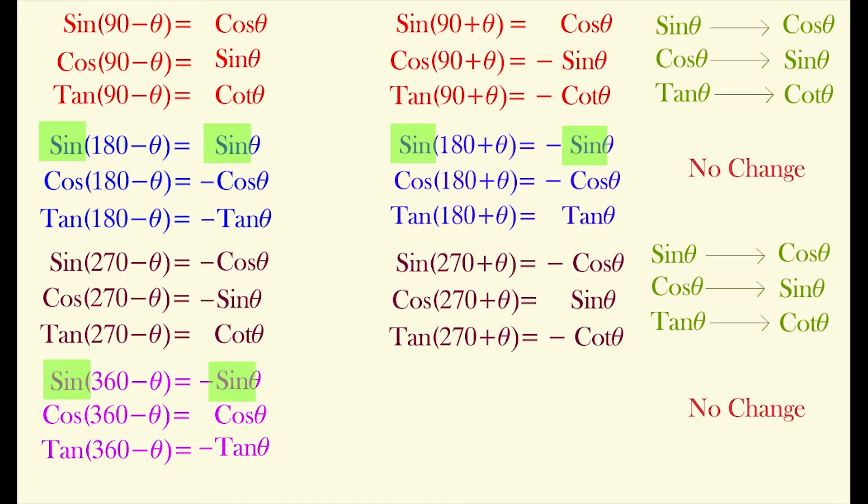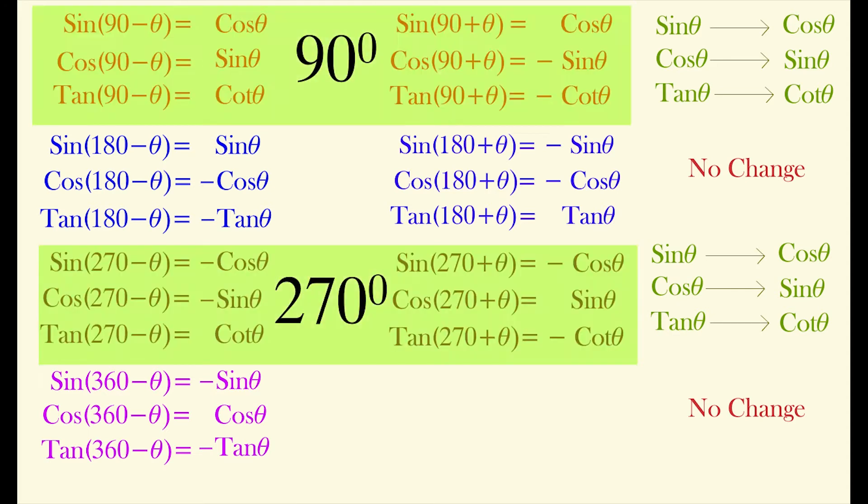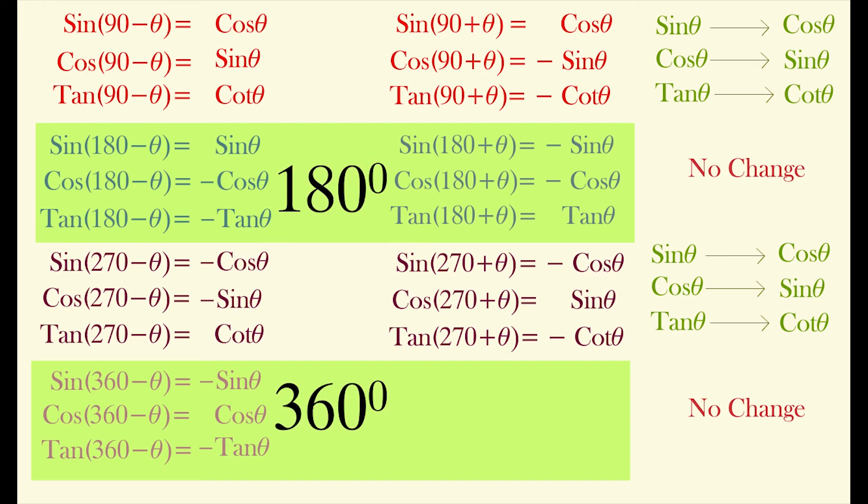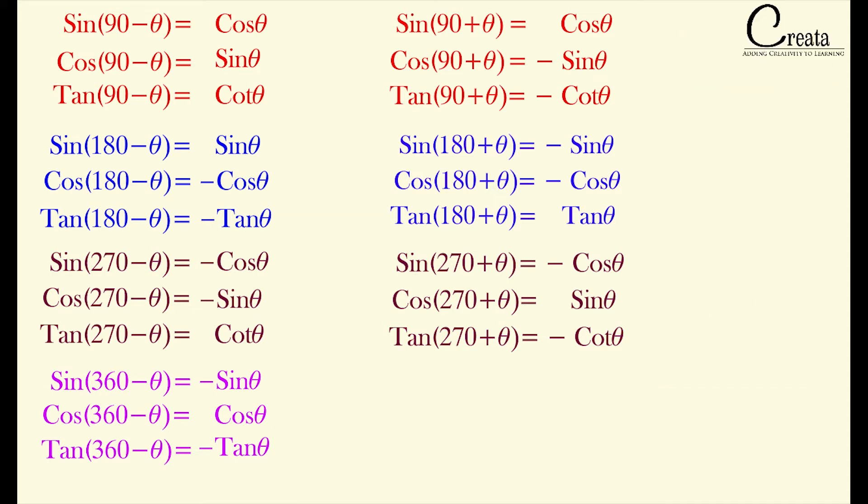Means sin remains sin, cos remains cos, and tan remains tan. It means wherever we got 90 and 270, the trigonometric forms change - sin to cos, cos to sin, and tan to cot. And in case of 180 and 360, there is no change. Got the point?